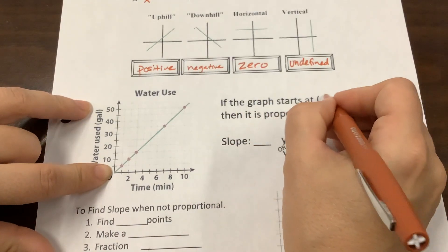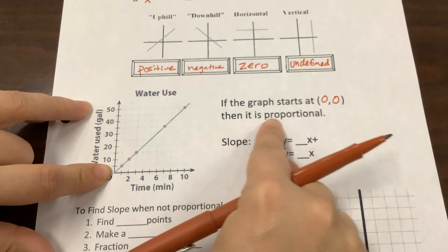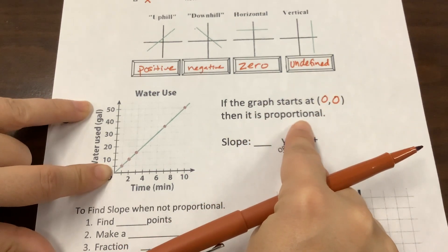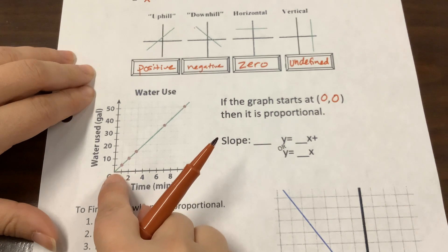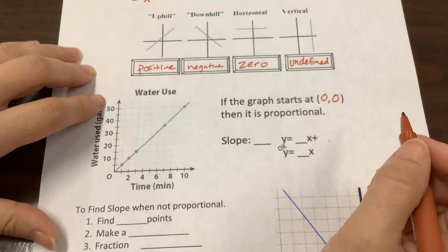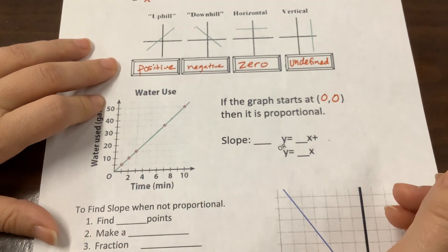If the graph starts at 0, 0, then it's what we call proportional. So if it goes through anywhere else besides the origin, it's called non-proportional. It's kind of like linear and non-linear.